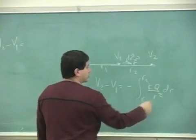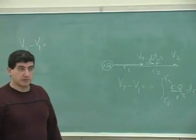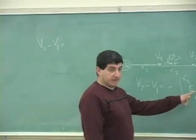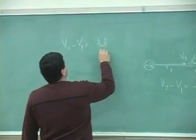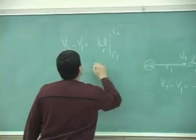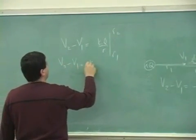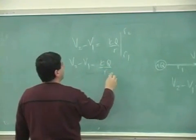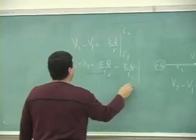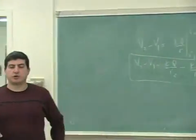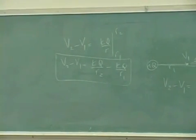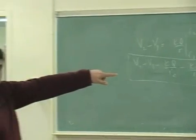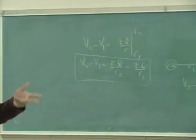The integral of 1 over R² is negative 1 over R. That negative 1 over R cancels the original negative sign, so we end up with KQ/R evaluated from R1 to R2. So V2 minus V1 equals KQ/R2 minus KQ/R1. Now, if they hadn't put the negative in the definition, it would have ended up being KQ/R1 minus KQ/R2 instead.